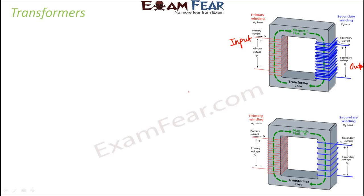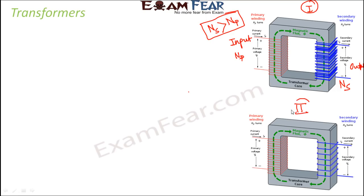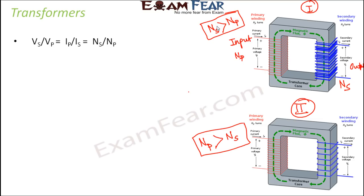There are two types of transformers. In type 1, the number of turns on the secondary coil (N_S) is greater than on the primary coil (N_P). In type 2, the number of turns on the primary coil is more than on the secondary. Voltage across the coils is directly proportional to the number of turns: V_S / V_P = N_S / N_P. But current is inversely proportional to the number of turns.